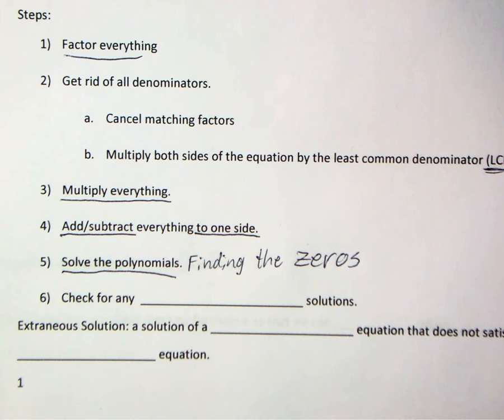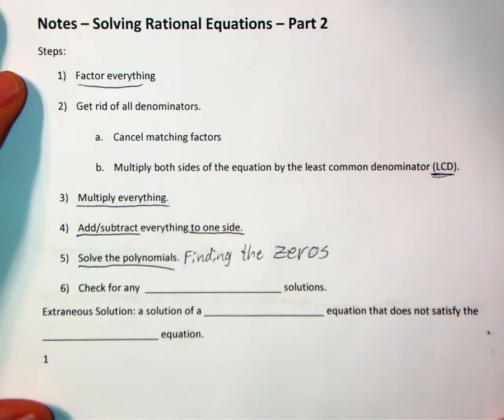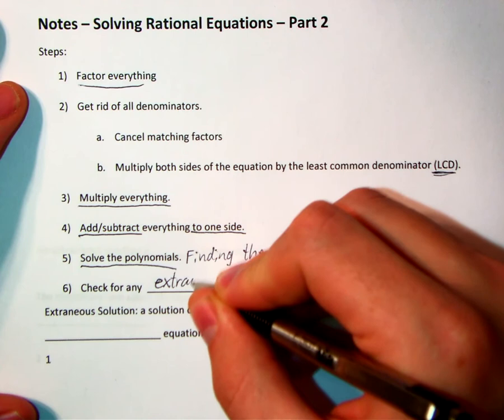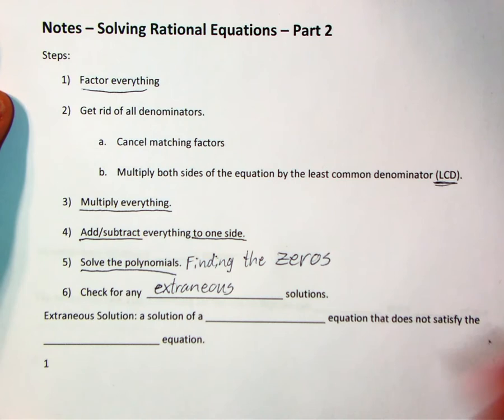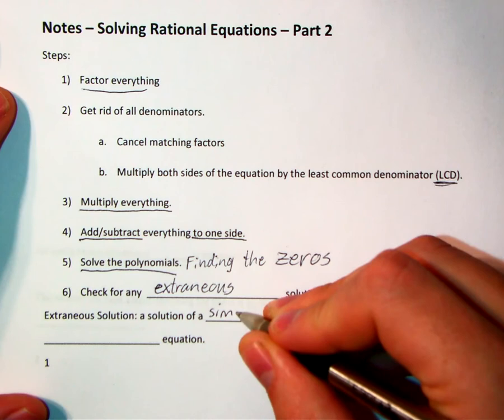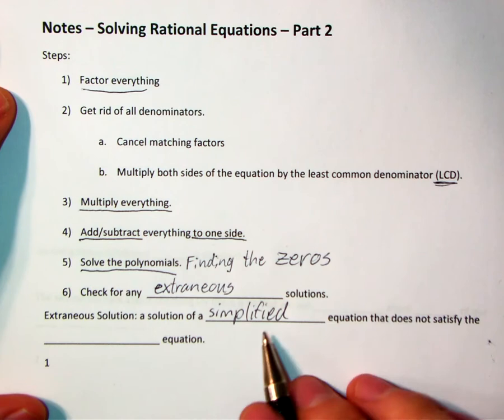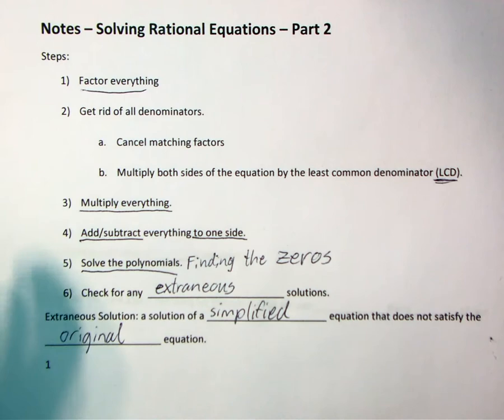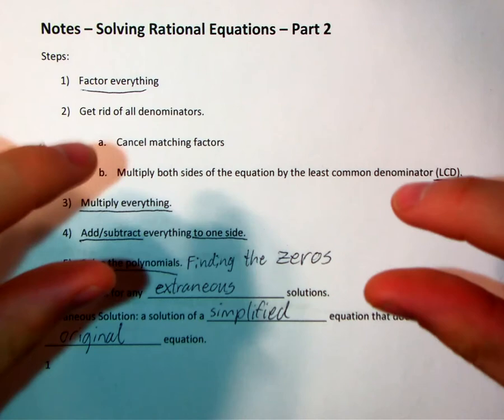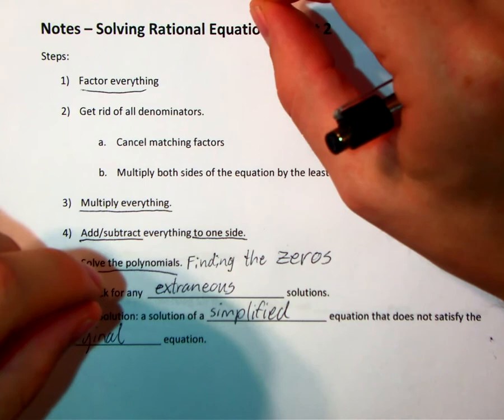Now we get to what's new about this video. We haven't done this yet, and that is to find extraneous solutions. That word might be new to you — it looks like 'extra' and then 'neos': extraneous. What is an extraneous solution? An extraneous solution is a solution of a simplified form of the equation, but it doesn't satisfy the original equation. Sometimes, as you're going step by step solving a problem, you eventually get to a solution that doesn't actually work for what you started with — and that solution is called an extraneous solution.